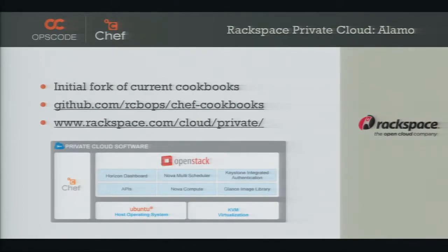Rackspace Private Cloud, their Alamo project — it's the same code base, a parallel fork. They're taking it and making it easy to install OpenStack. This is a great way to get your feet wet. It was one of the initial sources of the cookbooks based on work that had been done with some other people, and it's all open source as well. If you want to go to Rackspace's version, it's there. If you want to go to DreamHost's version, it's also up there on OS Ops. And they have really great documentation.